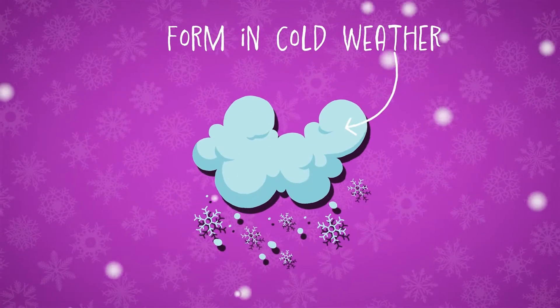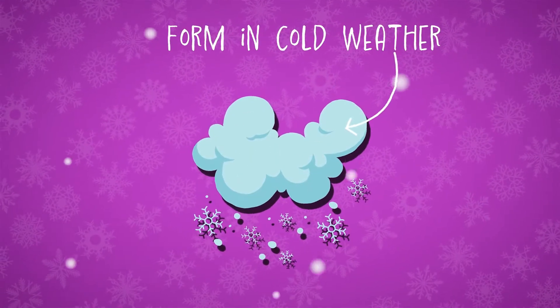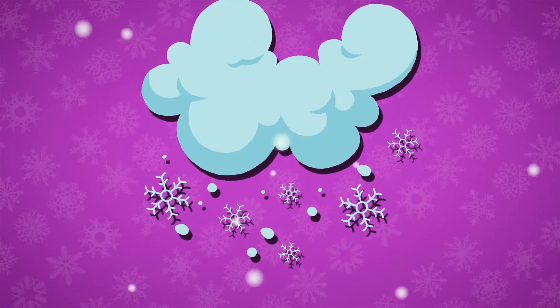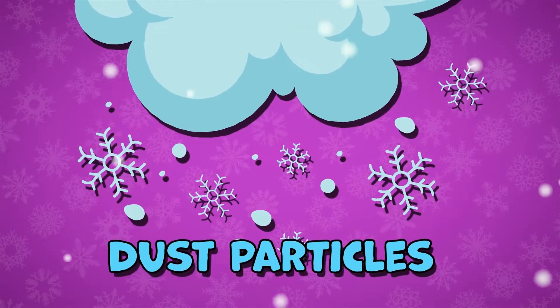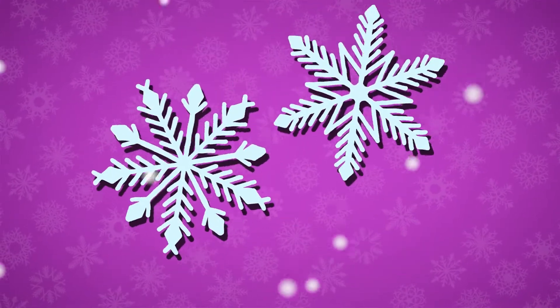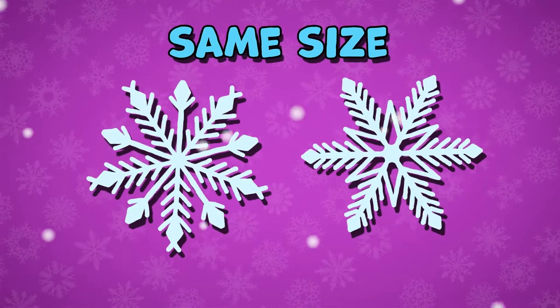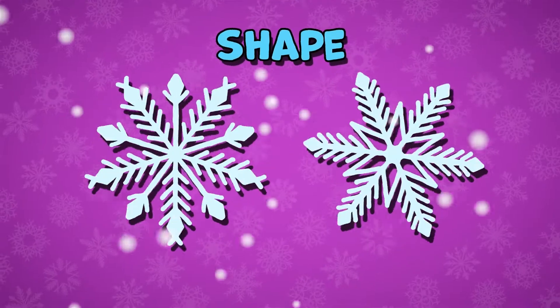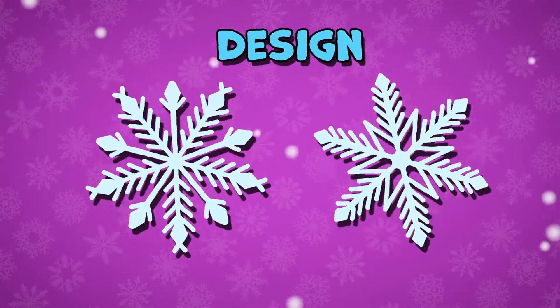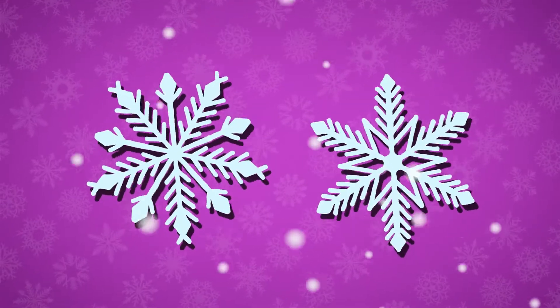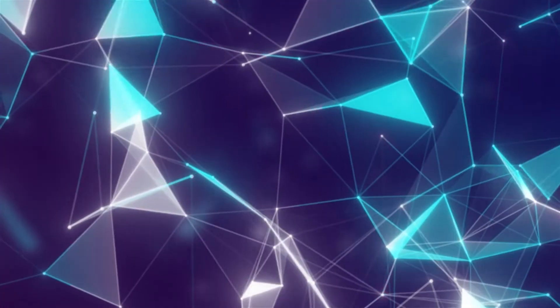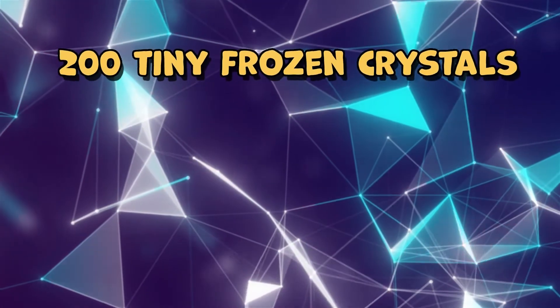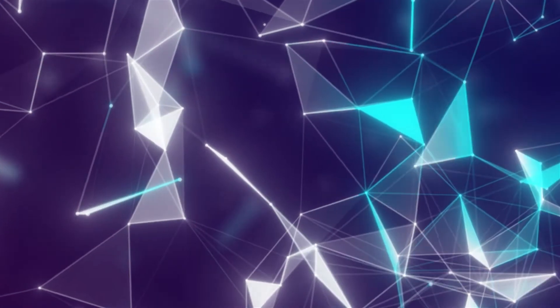Snowflakes form in cold weather when droplets freeze into dust particles. No two snowflakes are the same size, shape, and design. Snowflakes typically have six sides and are formed from about 200 tiny frozen crystals.